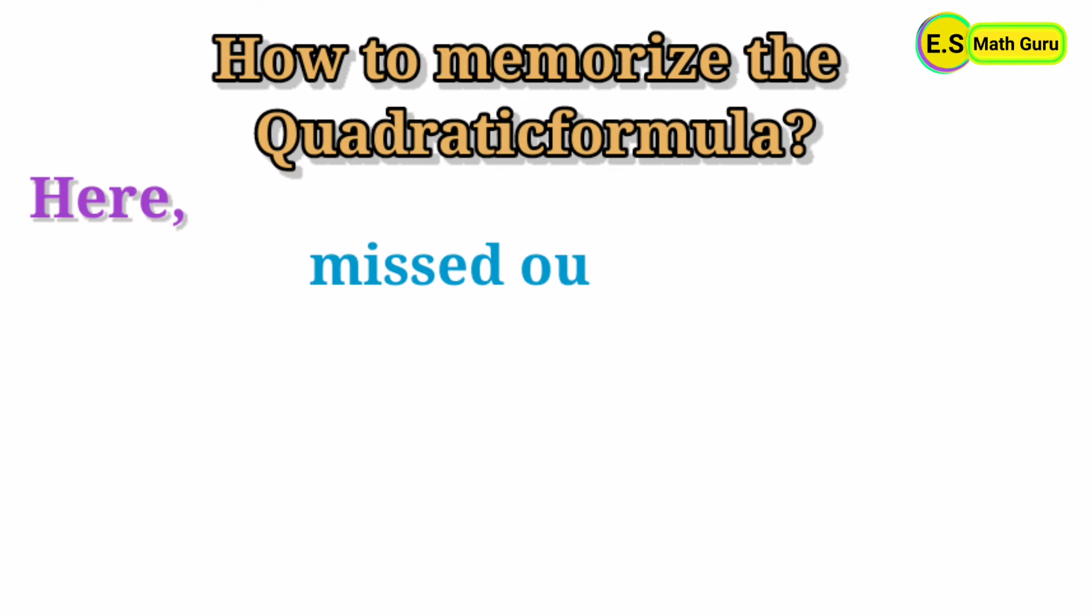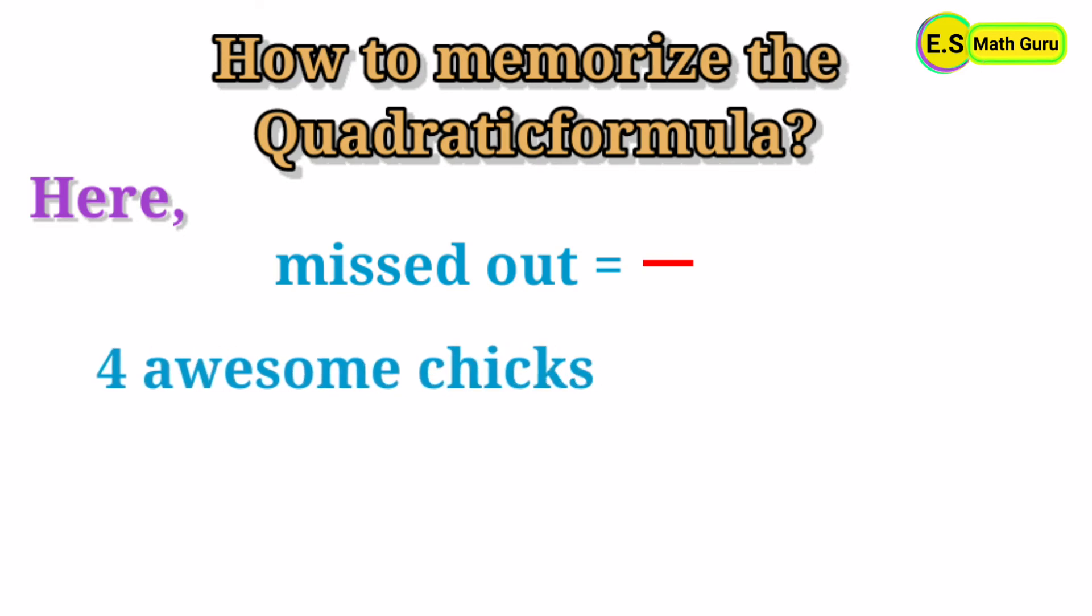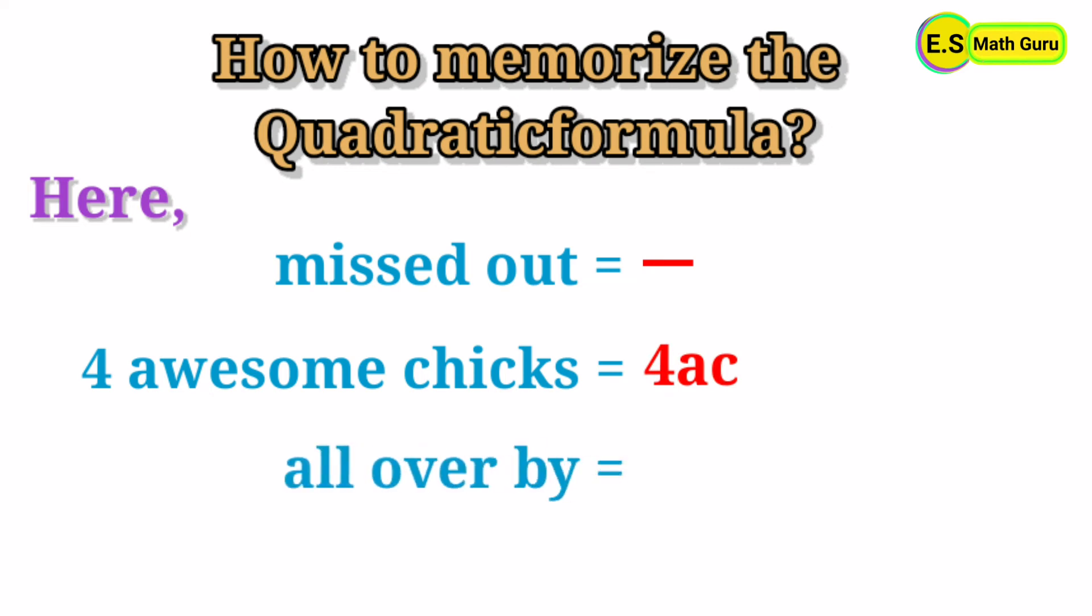'Missed out' means minus. 'Four awesome chicks' means 4ac. 'All over by' means divided by. '2 a.m.' means 2a.